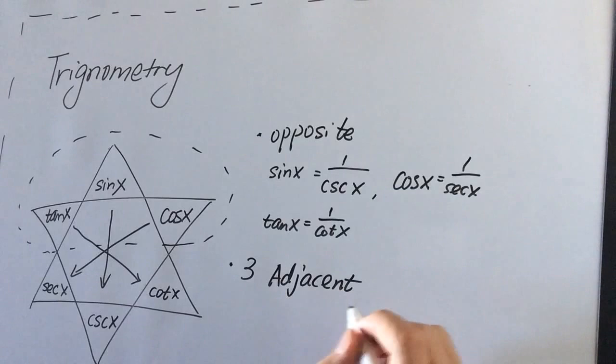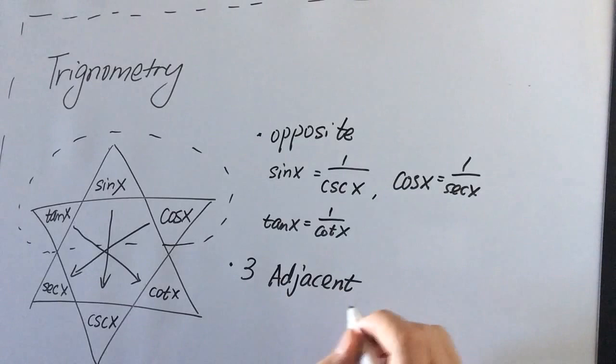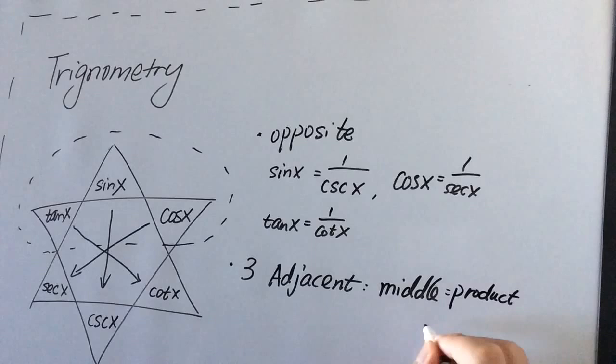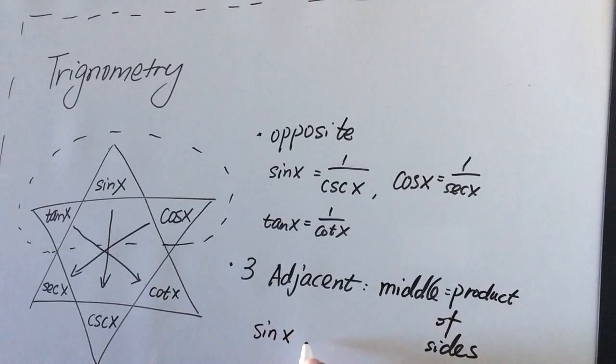So the middle one, we have the middle equals product of the sides. So what does that mean? For example, we have sine x. And that equals tangent x times cosine x.